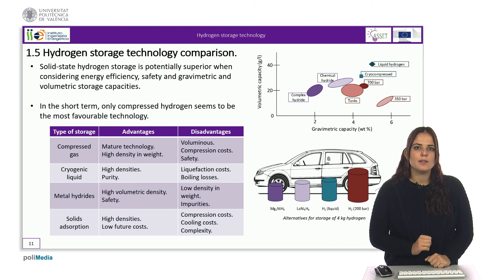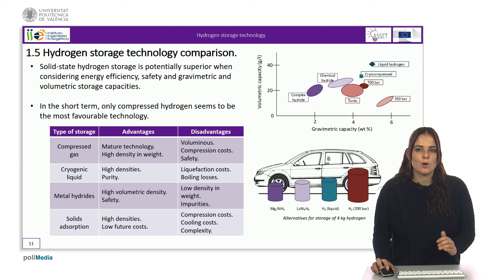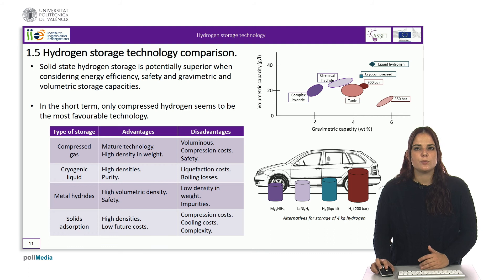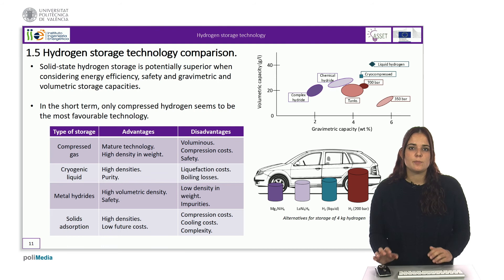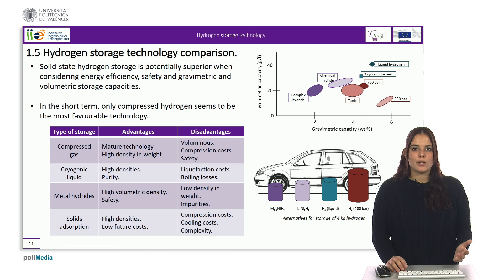Liquid hydrogen storage is a potential candidate for onboard storage. However, the losses due to the boil-off effect and the requirement of high liquefaction energy are the principal deterrents. Therefore, solid state hydrogen storage is potentially superior when considering energy efficiency, safety, and gravimetric and volumetric storage capacities. Nevertheless, the only storage system currently commercially available for use in vehicles is compressed hydrogen. The most expensive components in pressurized systems are the reinforcing materials used to work at high pressure. Tanks for storing liquid hydrogen have a lower cost due to the lower working pressure.